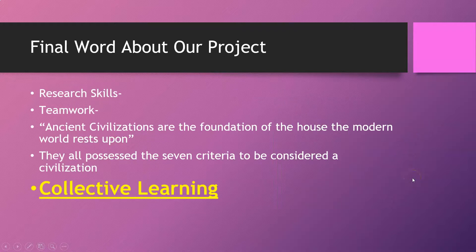Final word about the project: research skills. Be smart with your research. If you type 'China' into Google, you'll get too much. If you type a whole paragraph, it's going to confuse Google. Smart research skills: type something like 'ancient Egyptian inventions' — two or three words will get you to a good place. If you're working with teammates, make sure everyone is pulling their weight and stay on those who are not.